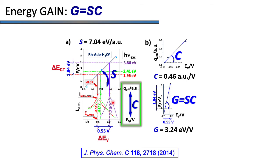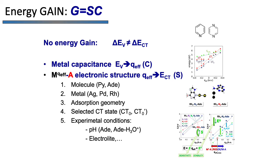This correlation is made through the slope C. C is an electrical capacitance of the metal which quantifies the capability of the metal in converting the applied electropotential into surface charge. Therefore, the electropotential cannot be directly correlated to the energy of the CT process, because the energy gain is the product of the slopes S and C. The metal capacitance is mainly dependent on the nature and the local morphology of the metal. The slope S is very sensitive to the nature of the molecule, the nature of the metal, the geometry of the adsorption, the selected CT state, and many other experimental conditions.